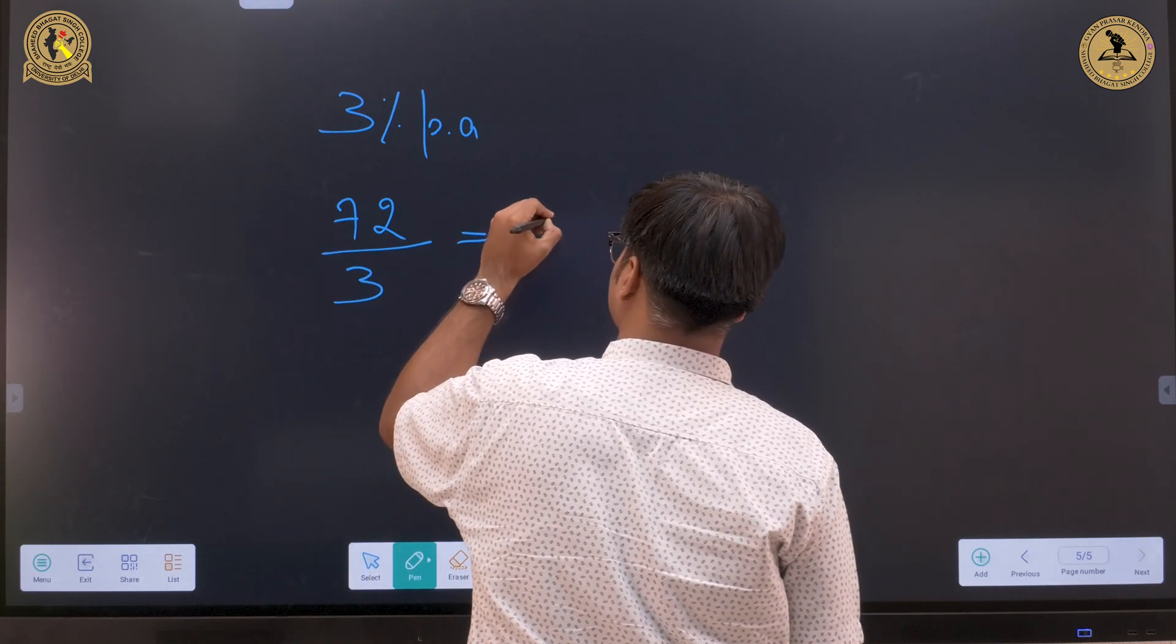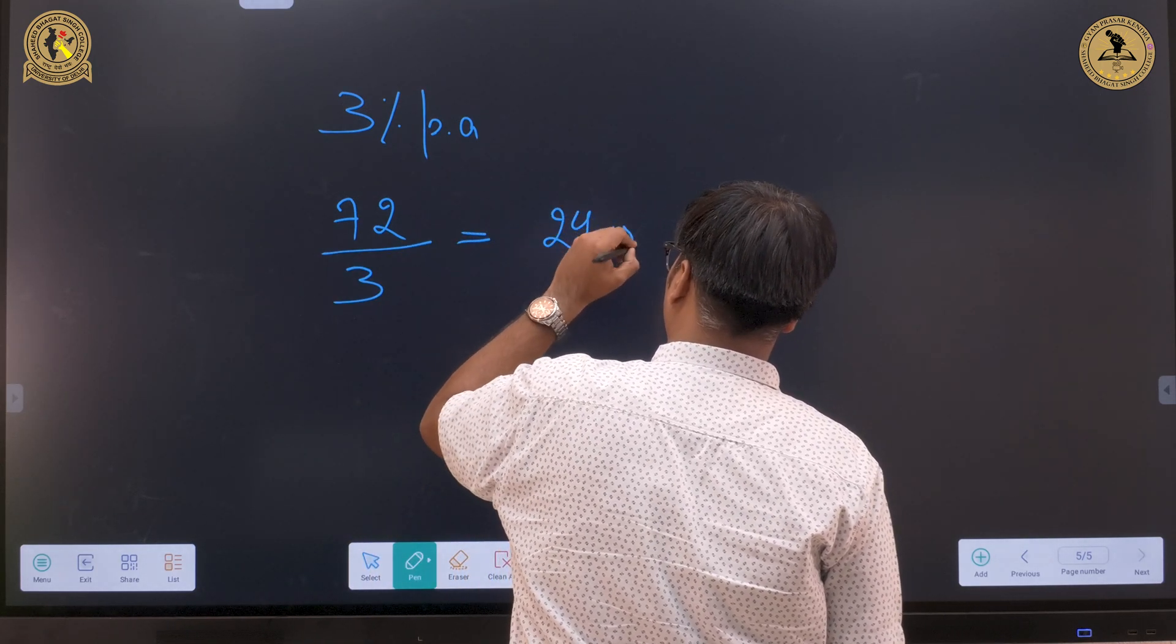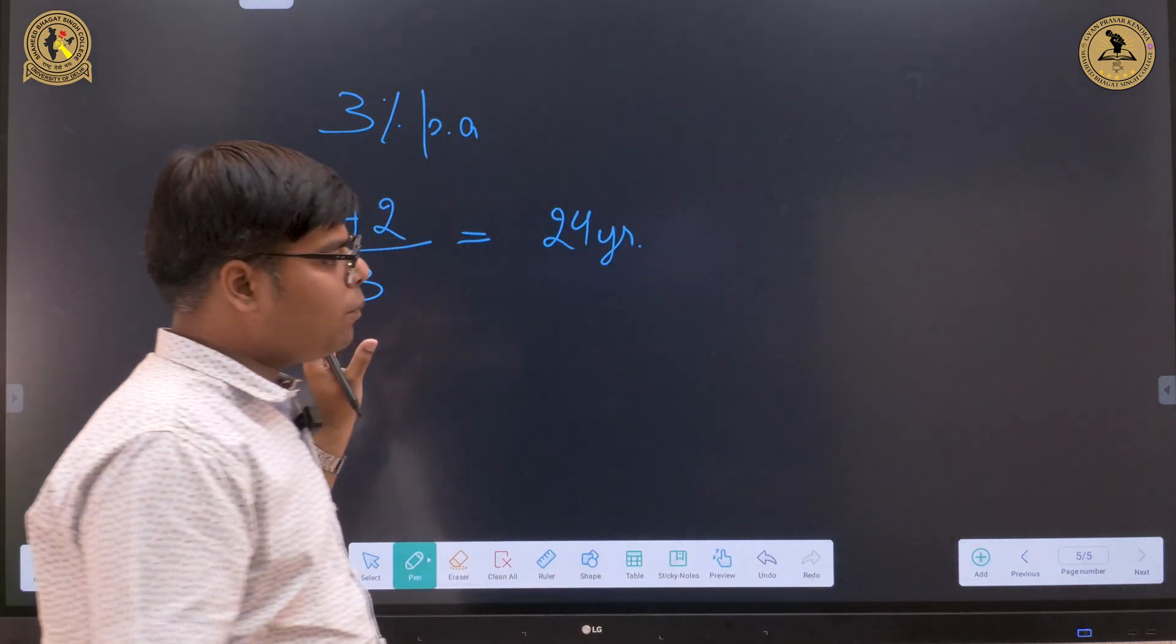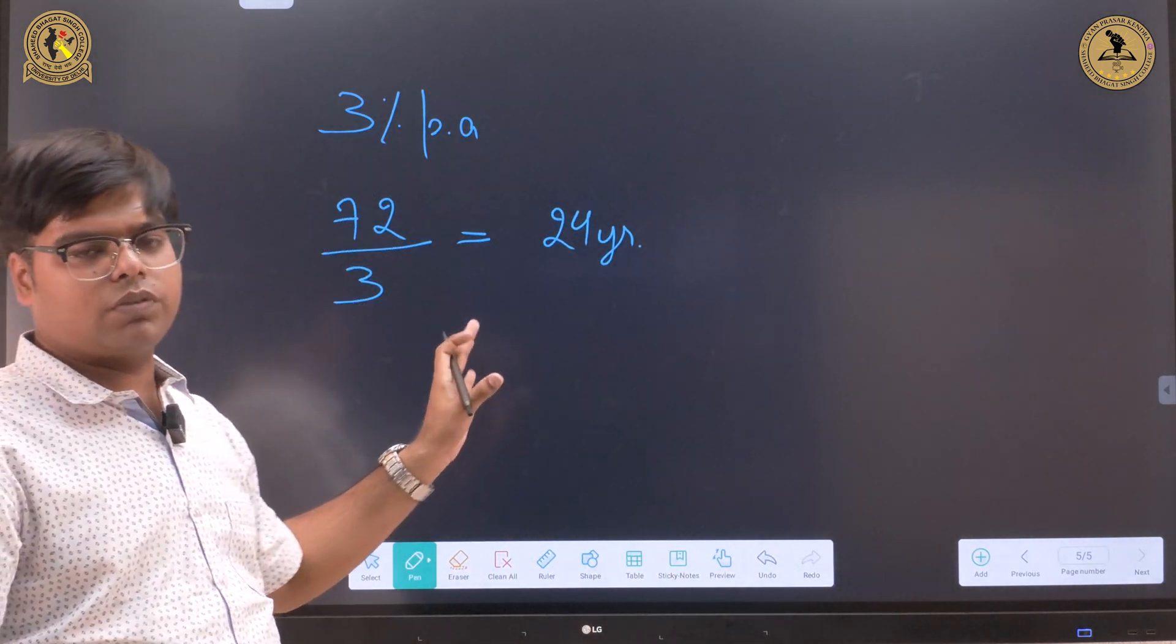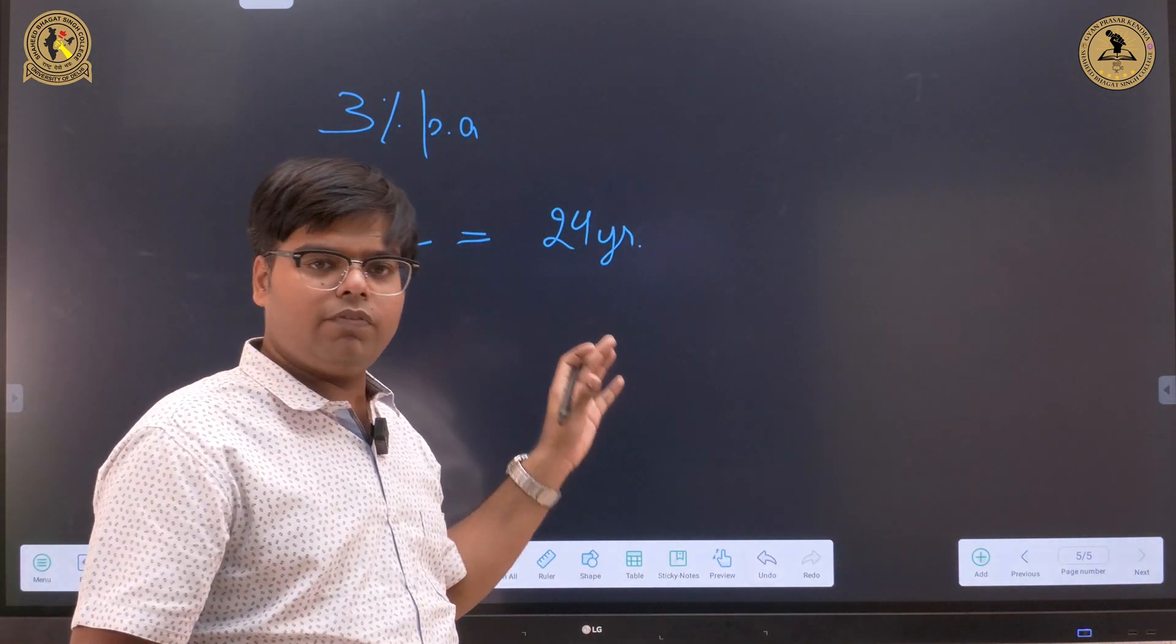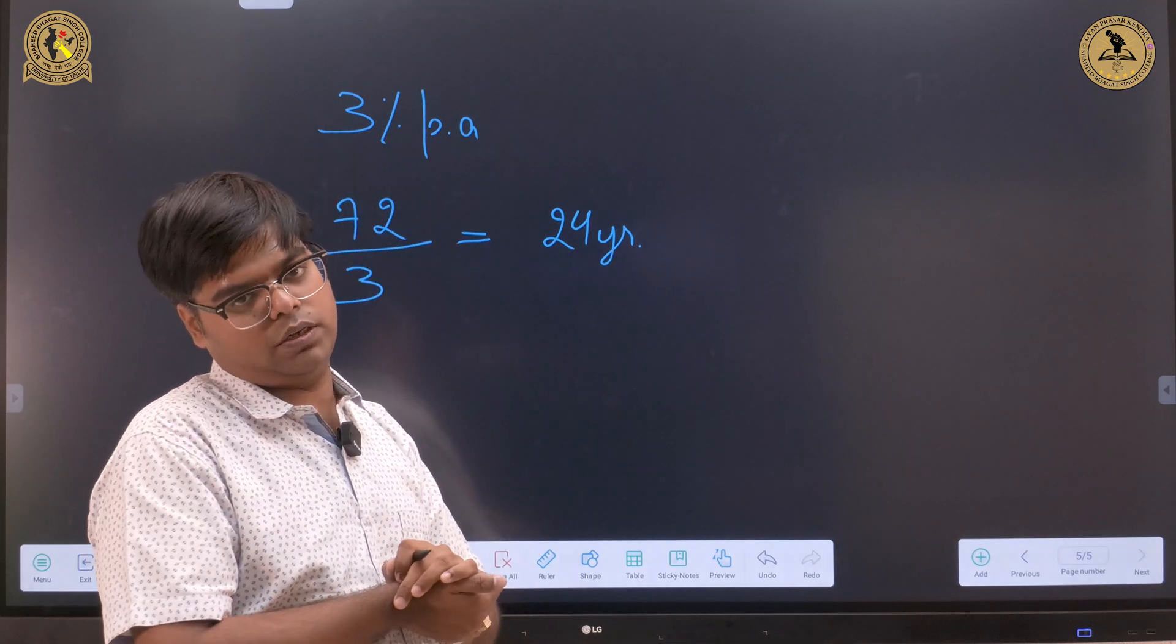That is 24 years. So if my population is growing at a rate of 3% per annum, it will get double up in approximately 24 years.